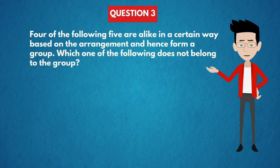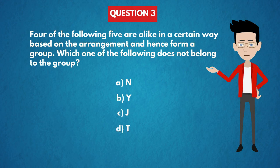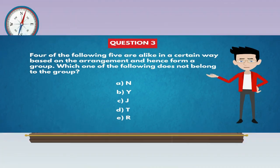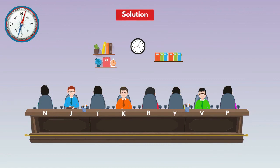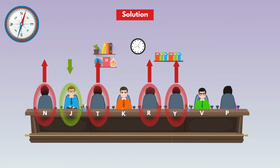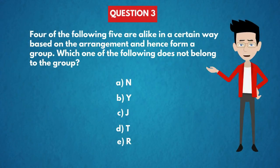Question 3: Four of the following five are alike in a certain way based on the arrangement and hence form a group. Which one does not belong to the group? Options: A) N, B) Y, C) J, D) T, E) R. N, Y, T and R face north direction, while J faces south direction. So except J, all face north. The answer is Option C: J.